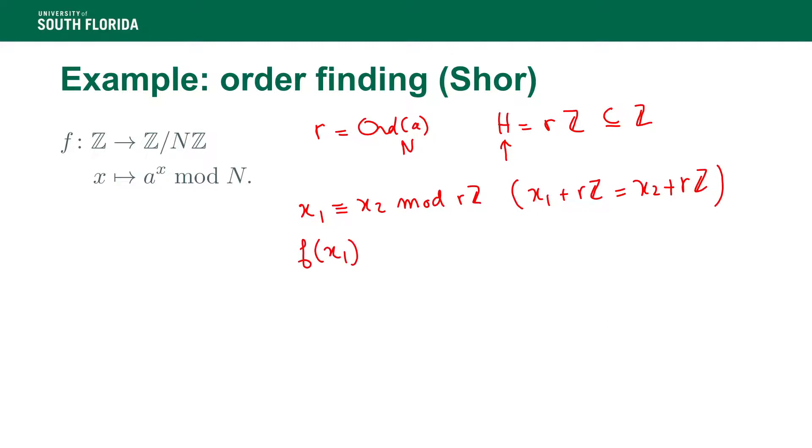F of X1 is going to be equal to A to the X1 mod N, and that is going to be equal to A to the X2 plus some multiple of N modulo N, and that is going to be A to the X2 mod N, because A to the R is congruent to 1 mod N. So what it means is this is equal to F of X2. So what we have is if they're the same modulo N, X1 and X2, then F evaluates to the same value.